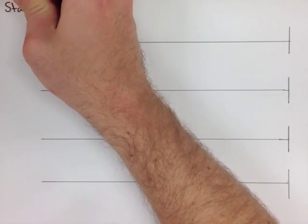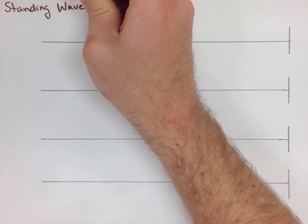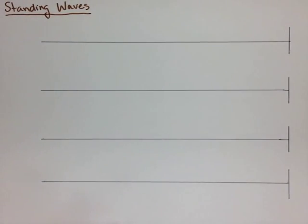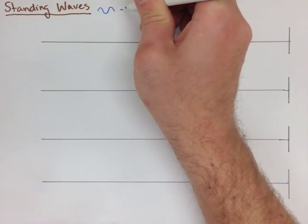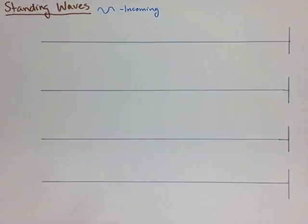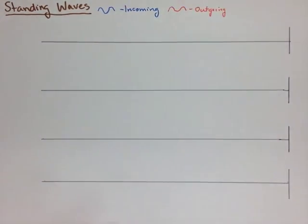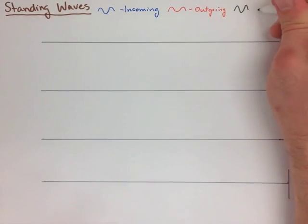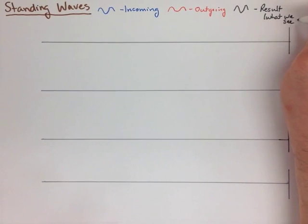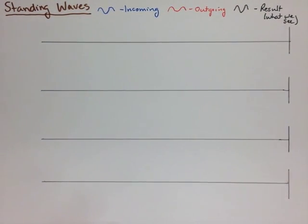The next thing we're going to look at are called standing waves. For this, we're going to have four diagrams, and we're going to color code it. We're going to have incoming waves, which are going to be blue, outgoing waves, which are going to be red, and what we actually would see are going to be the black waves.